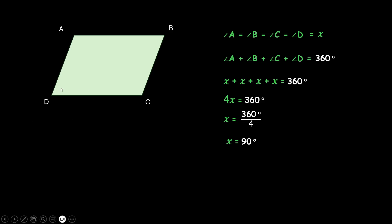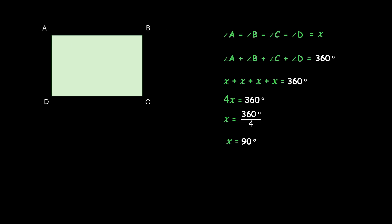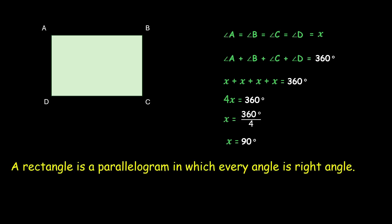We reconstruct the shape with all angles at 90 degrees and we get a rectangle. So a rectangle is a parallelogram in which every angle is a right angle. A rectangle is a special kind of parallelogram, and since it is a parallelogram it fulfills all the properties of a parallelogram.